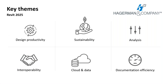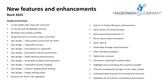As we go through the new features in Revit 2025, you will see they fall under six key themes, which serve as our outline for the presentation today: design productivity, sustainability, analysis, interoperability, cloud and data, and documentation efficiency. Here is a list of features for design productivity — I'll give everyone a second to peruse the list, and it will continue on the next slide, so you can see we've got a lot of stuff to cover.